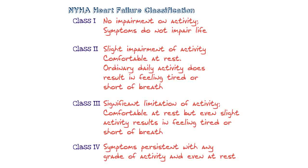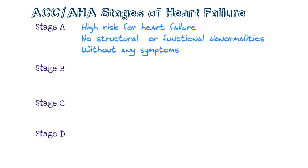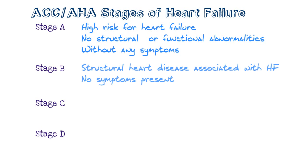The second classification system is the ACC-AHA stages of heart failure — American College of Cardiology and American Heart Association — with four stages going from A, B, C, and D. Stage A patients are high risk for heart failure due to their comorbidities, but have no structural or functional abnormalities on echocardiogram and are without any symptoms. In Stage B, patients have structural abnormalities — there is some heart disease present — but they haven't developed symptoms yet.